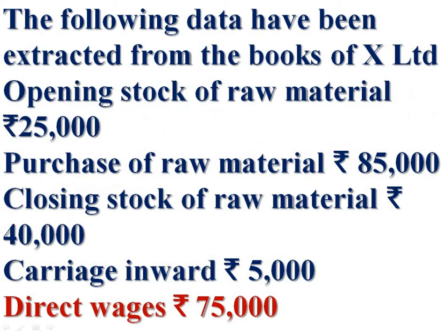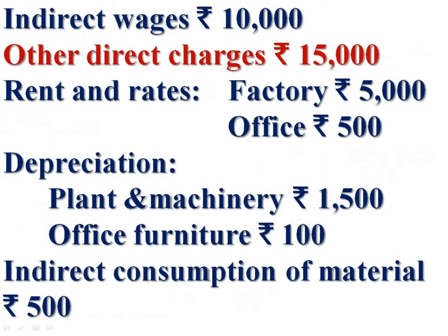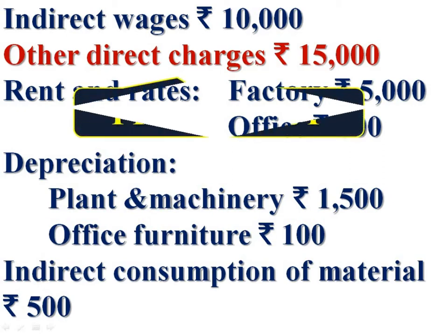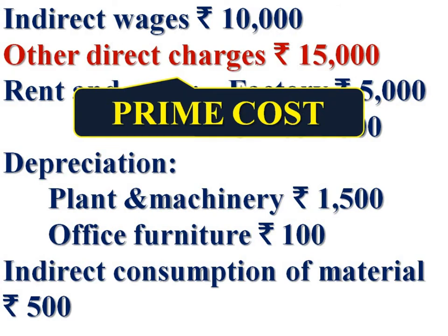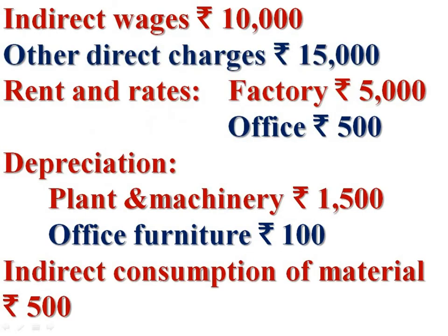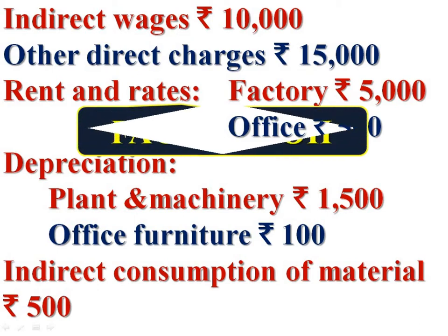Direct wages — it is forming part of prime cost. Prime cost includes direct wages, rent and rates of factory, and depreciation of plant and machinery. Indirect consumption of material — these are items relating to production or factory, therefore these are factory overhead.